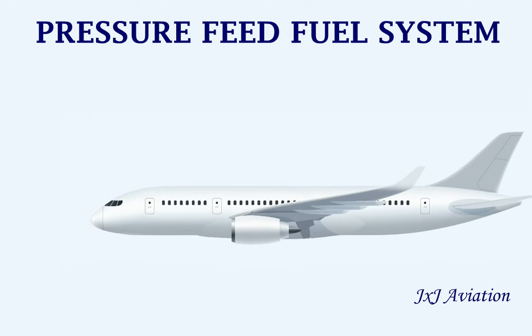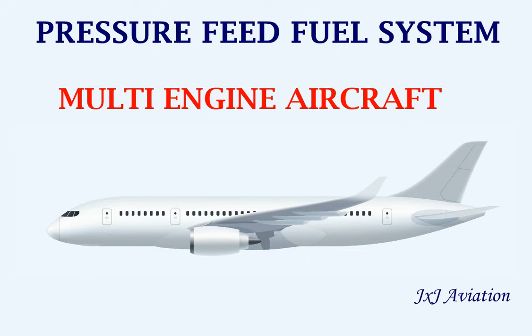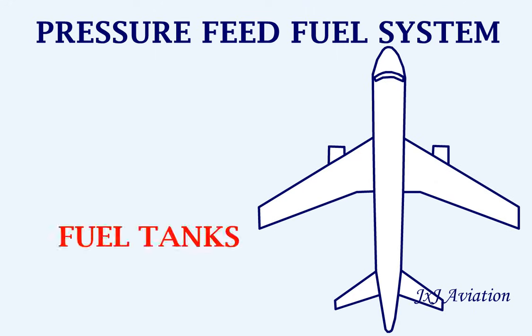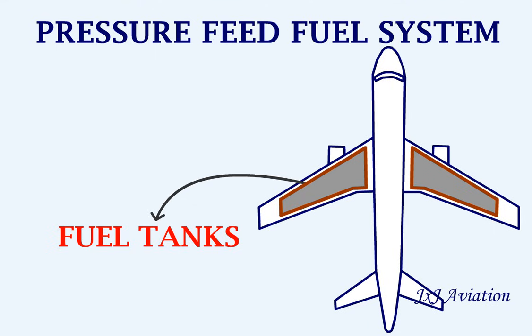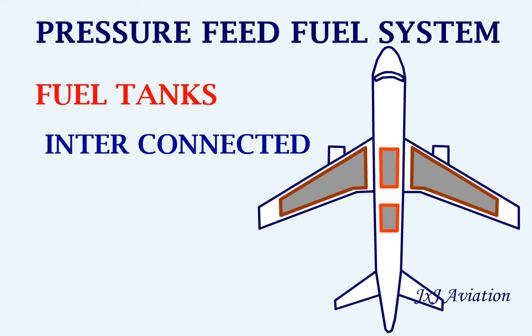Next we will look at the pressure feed fuel system. This system is widely used in all multi-engine aircraft. In this system, the fuel is stored in different tanks. These tanks may be located in the wings or in the fuselage. All these tanks are interconnected to allow the transfer of fuel.